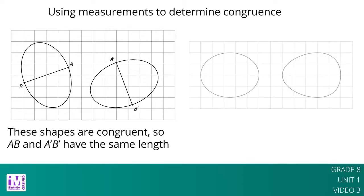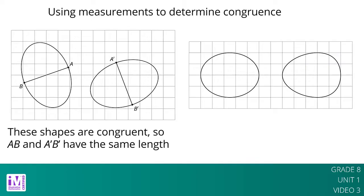For example, these two ovals don't look congruent. On both, the longest distance is 5 units across, and the longest distance from top to bottom is 4 units.